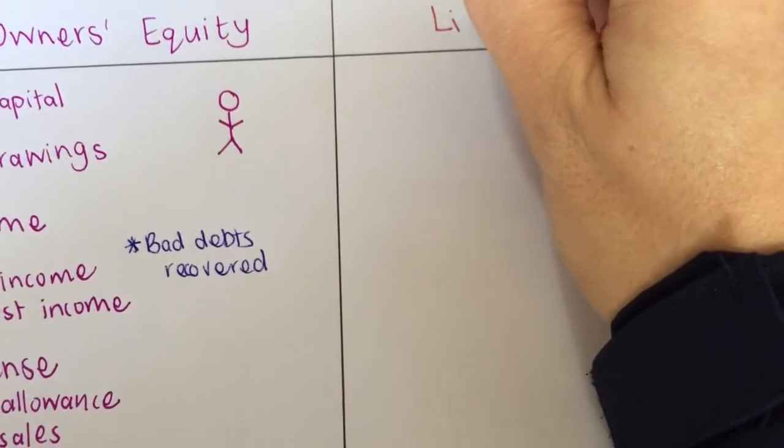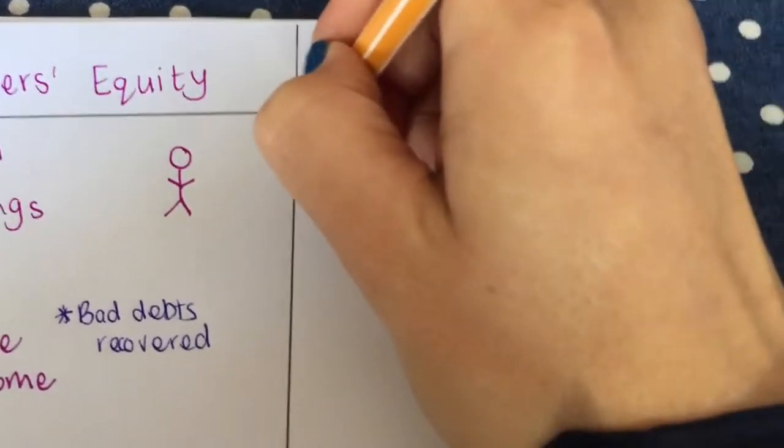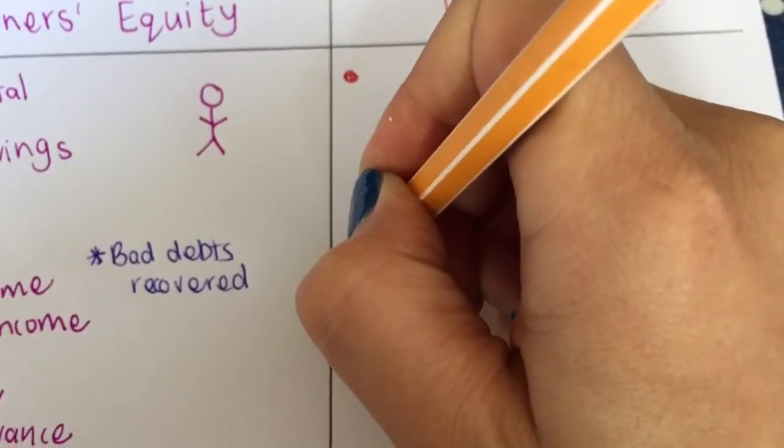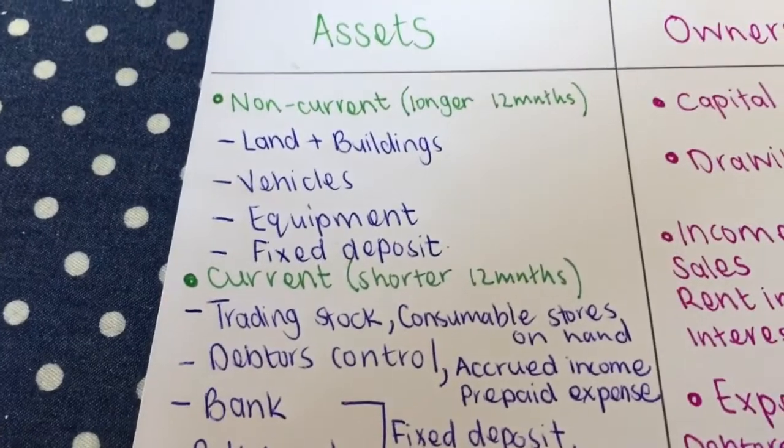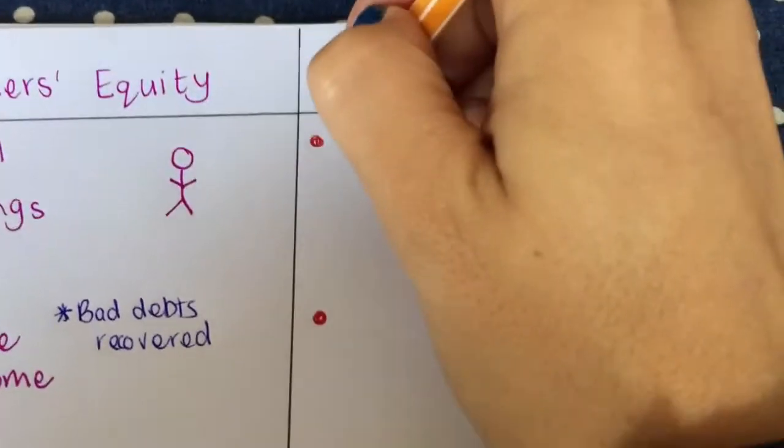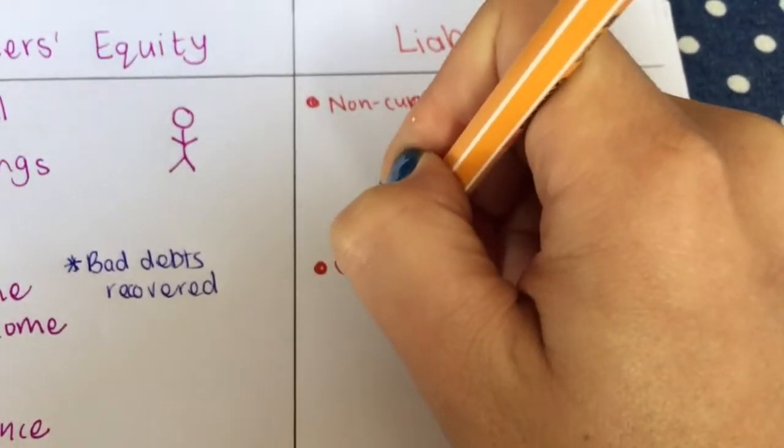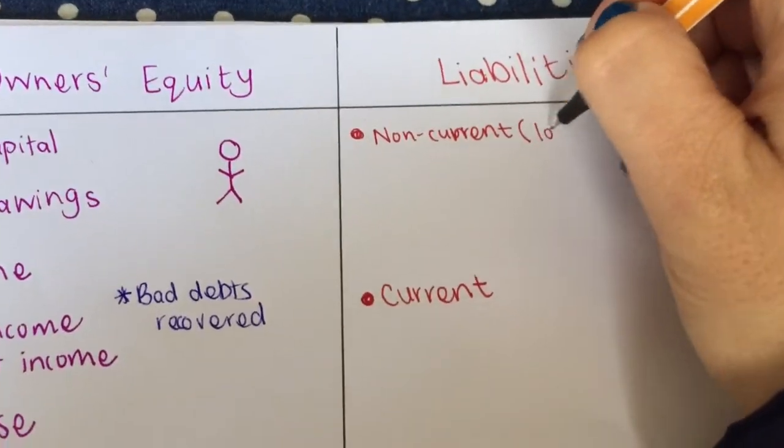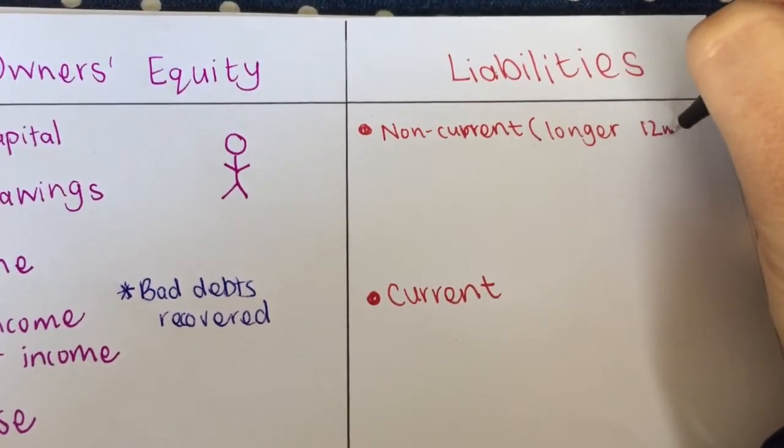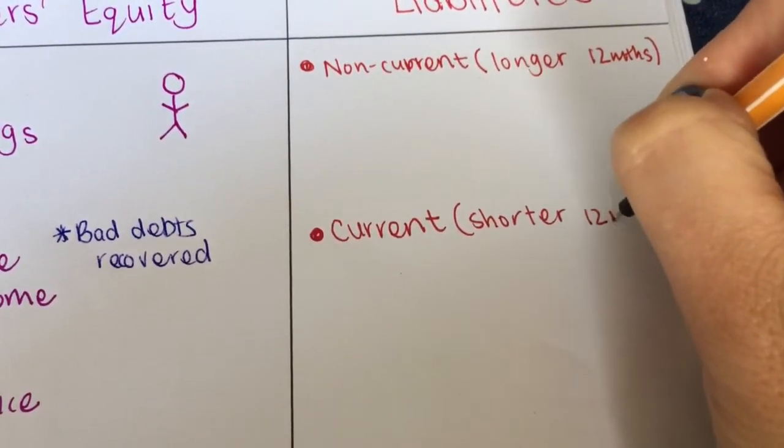And then the last one will be my liabilities. Now liabilities is the opposite of my assets but it works in the same way. I will have two headings. Non-current means longer than 12 months, and current means shorter than 12 months.